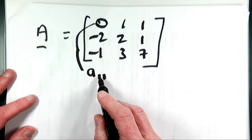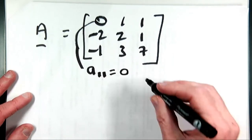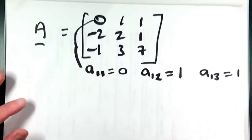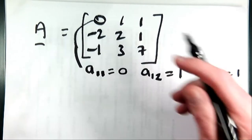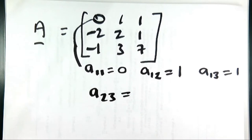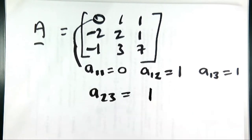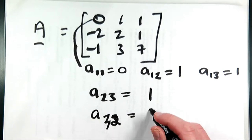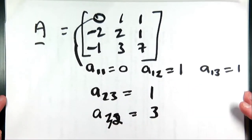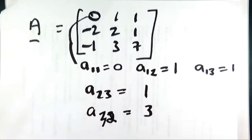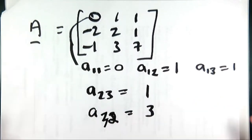So if I want A₂₃, that's the entry in the second row and third column, which in this case is 1. And if I want A₃₂, that's the entry in the third row and second column, which is 3. This is how I first started doing this — this way of identifying individual elements. It's very important that you're able to do this in certain situations. It's an important notation device.